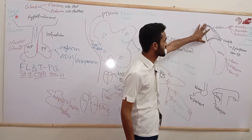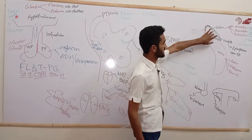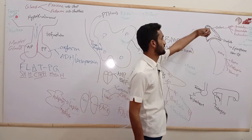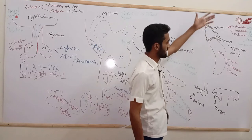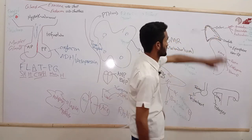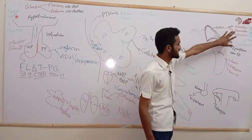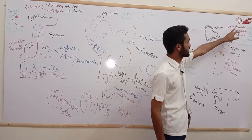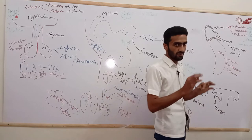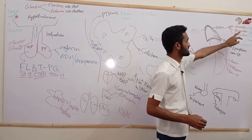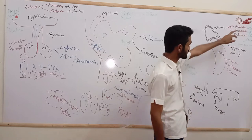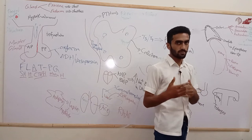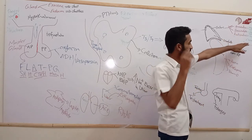The adrenal gland is superior to the kidney. It has two parts: the central medulla and the outer cortex, with different embryological origins. The cortex is divided into three zones — remember them as GFR: Glomerulosa, Fasciculata, and Reticularis.